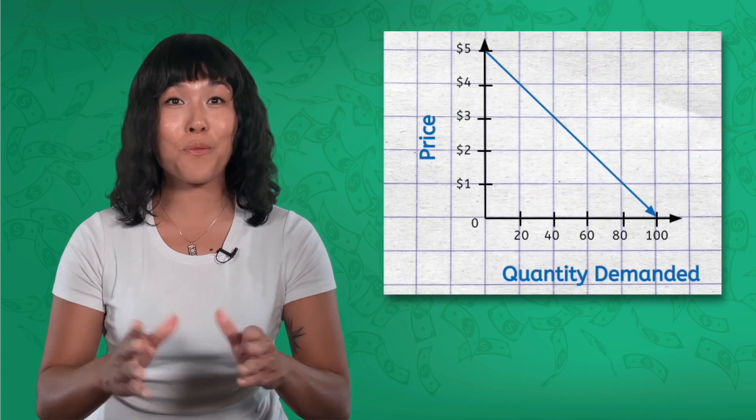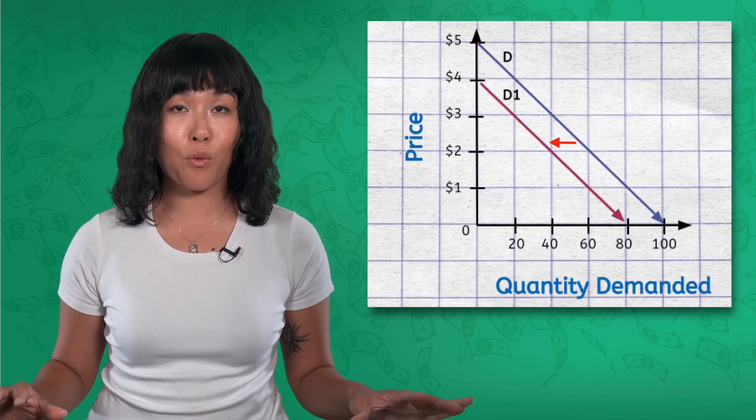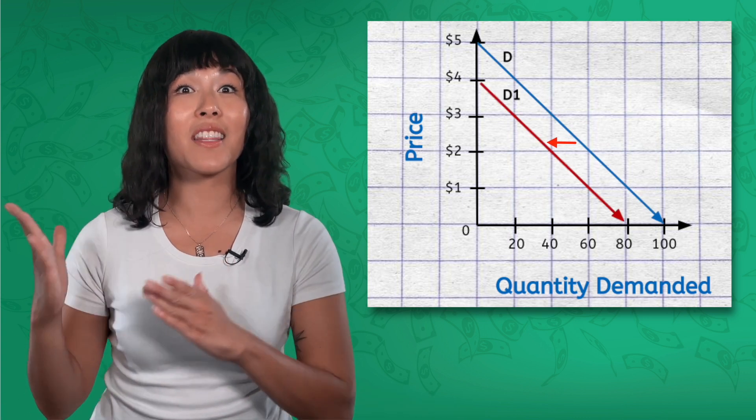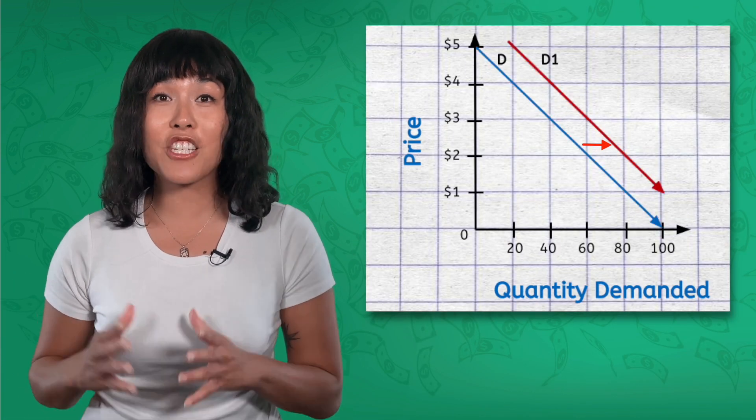Imagine that you and your best friend normally get a pizza, watch movies, and play video games on some Friday nights — this is your base demand curve for pizza. If one Friday night your friend is sick and it's just you, due to a demographics change, the demand for pizza has decreased at every price point, and the demand curve has shifted to the left. But what if one Friday night you get together with three more friends, bringing the total number of people to five? That's right — demand increases, and the entire demand curve shifts to the right.